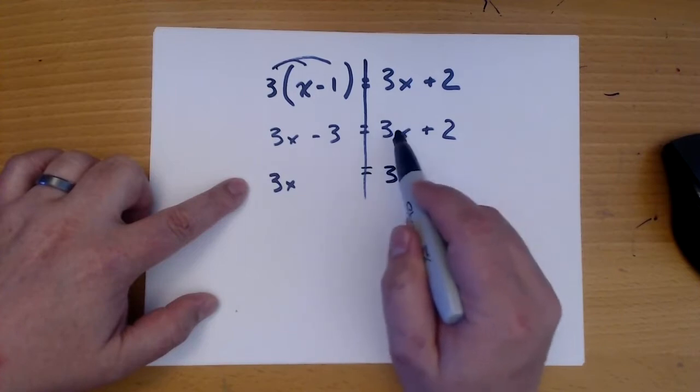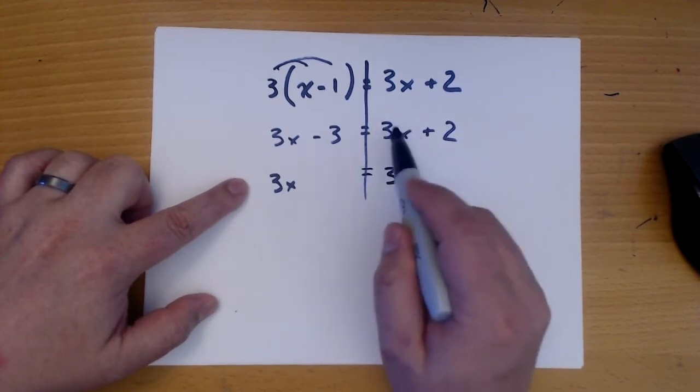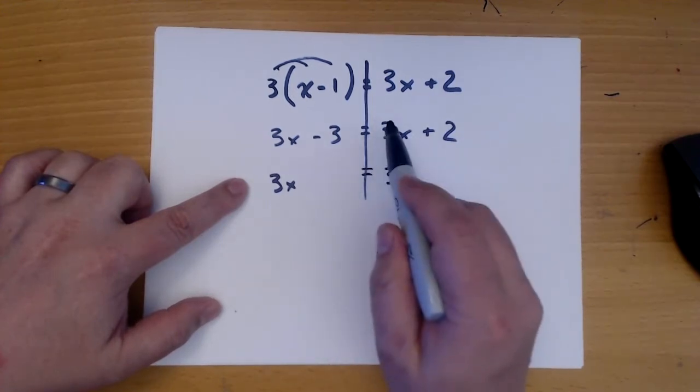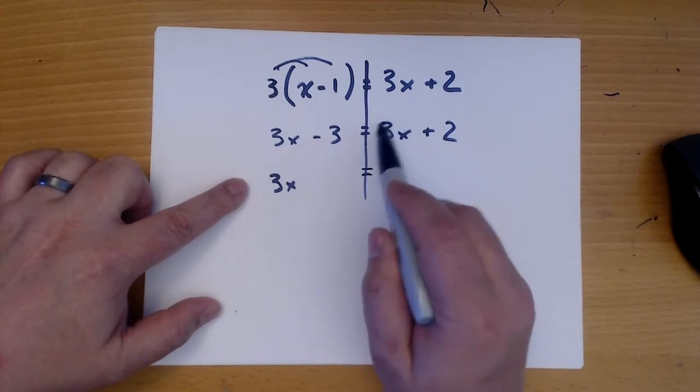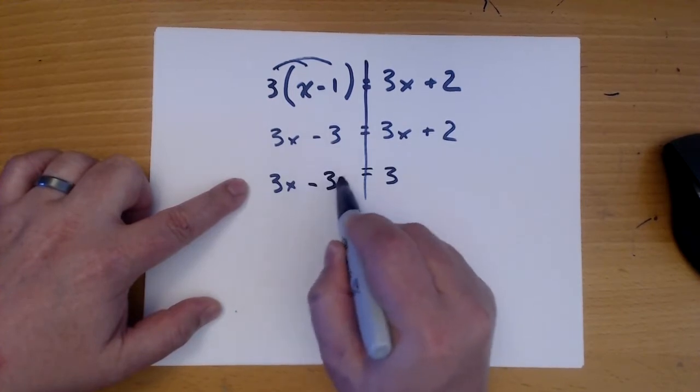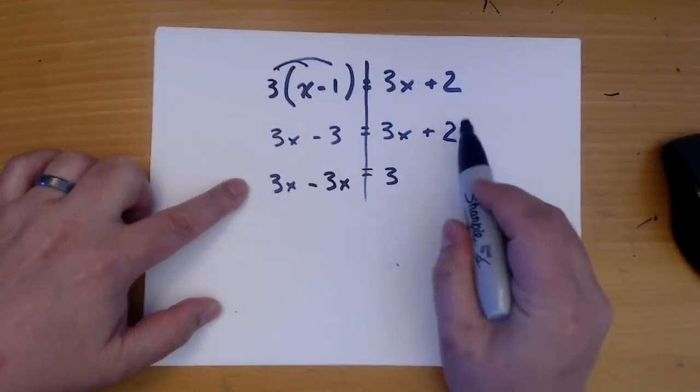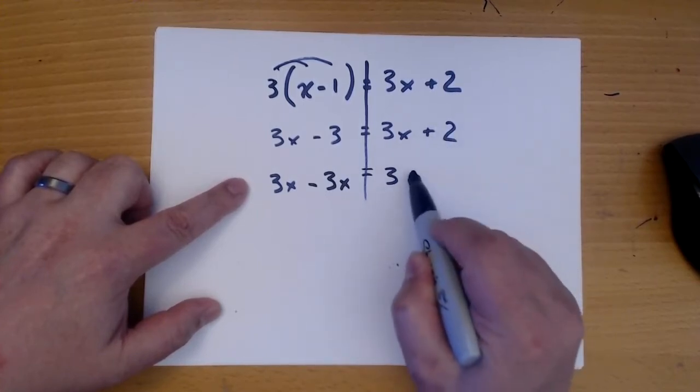This 3x is not in the right place. It's a variable. It belongs over here. So we pick it up and move it over here, and when it crosses the line, it changes sign. So this positive 3x comes over as a negative 3x. This 2 is fine just where it is. It's a constant and it belongs over here, so we just copy it down.